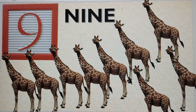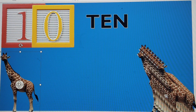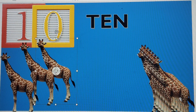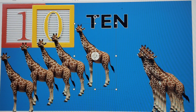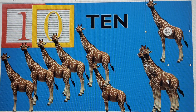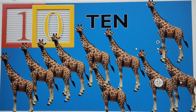Let's move to the next number. What will be the next number? Number 10. We write it like 1-0, ten. The spellings are T-E-N. Let's make 10 giraffes: 1, 2, 3, 4, 5, 6, 7, 8, 9, and this one is ten. Ten giraffes.